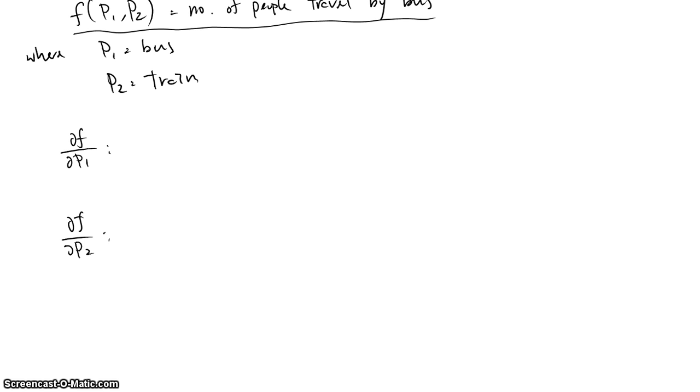∂f/∂P1 is the amount of people that changes according to the changes of P1. We know that P1 is the price of bus, so this represents the amount of people traveling by bus changes when P1 changes.